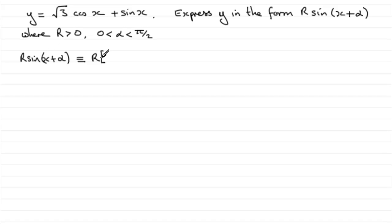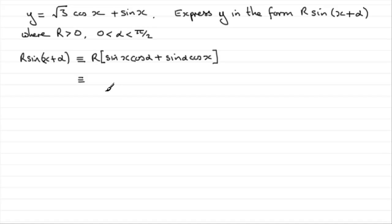So for our expression we get sine x cos alpha plus sine alpha cos x. Now expanding with the r, I'm going to put the cos alpha term first: r cos alpha sine x, and then we have r times sine alpha cos x, giving us plus r sine alpha cos x.